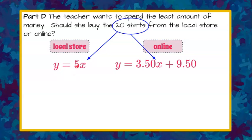So y is equal to 5 times 20, which is 100. So it would cost her $100 if she went to the local store to buy 20 shirts.